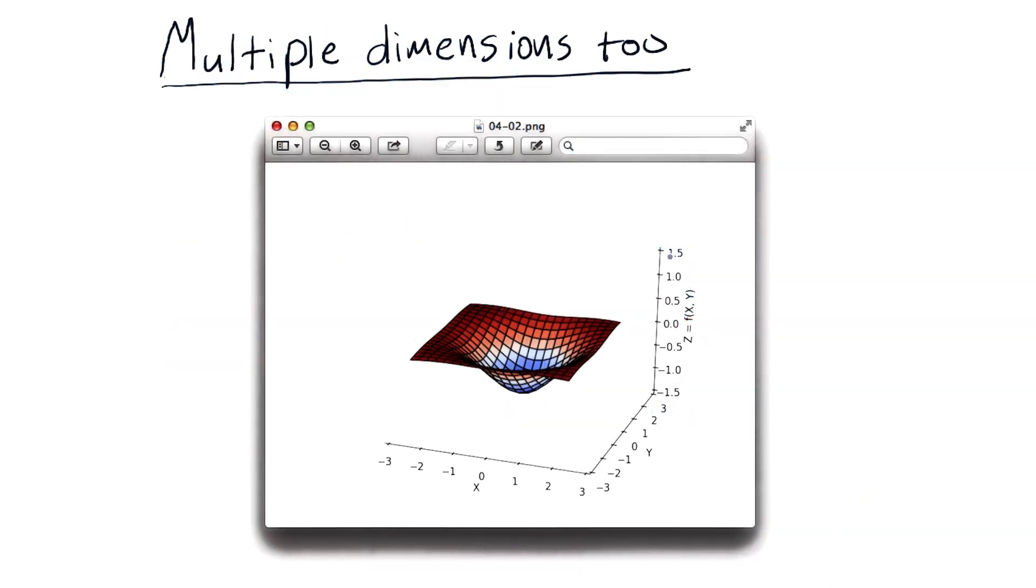So far, we've been looking at functions that just have one dimension in x. So for instance, the parabola that we looked at. It's just as easy for these optimizers to work in multiple dimensions.